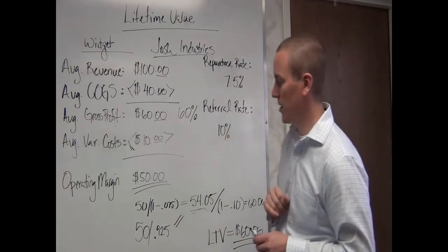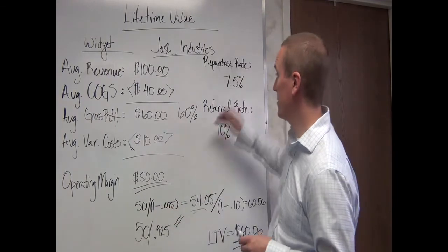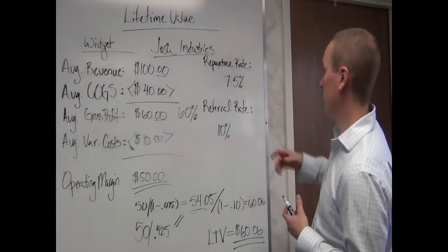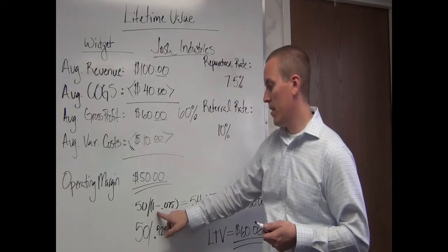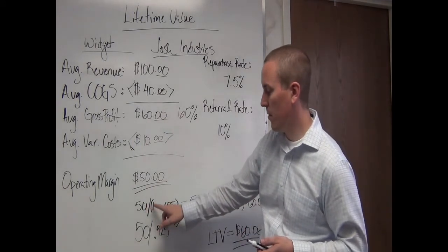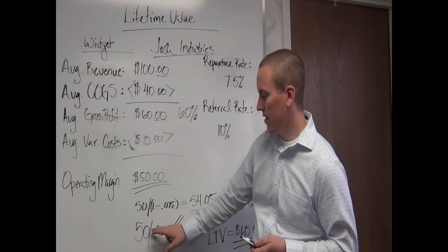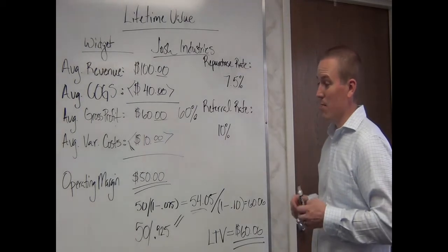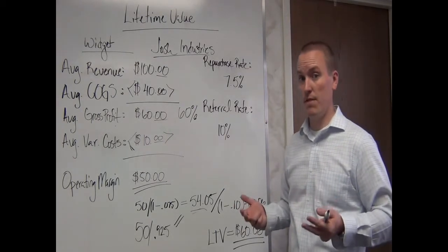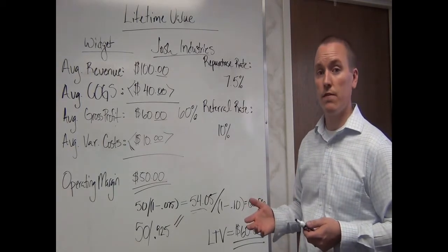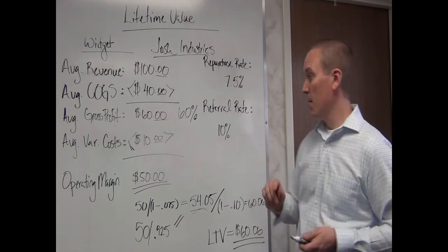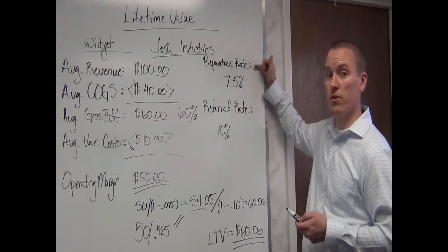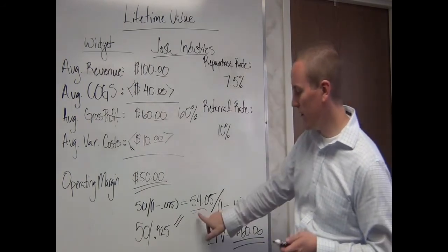The first thing we're going to do is take the $50 and divide it by one minus the repurchase rate. I'm not going to multiply by 1.075 — you have to divide. If you divide 50 by 1 minus 0.075, that's the same as dividing 50 by 0.925, and either way I get $54.05. If you tried multiplying $50 by 1.075, you'd underestimate the customer lifetime value because you'd only capture one repurchase, not the 7.5% that repurchased a second, third, or fourth time, et cetera.